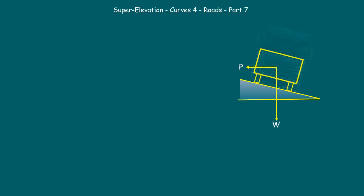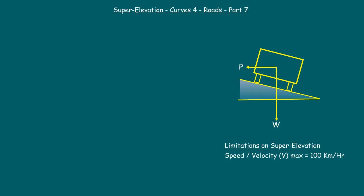Before going into detail, we must know the limitations on the designing of superelevation. Those are: one, the permissible speed, that is the design speed. The maximum permissible speed in the US, China, and Korea is 120 km per hour. Except these three countries, all remaining countries follow a maximum permissible speed of 100 km per hour.